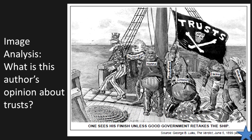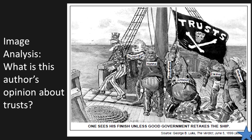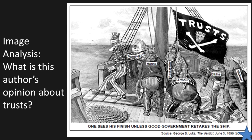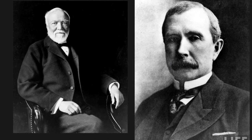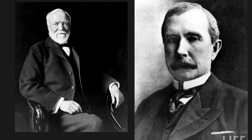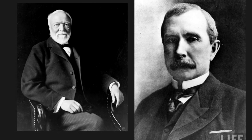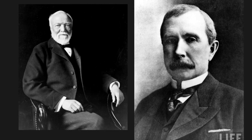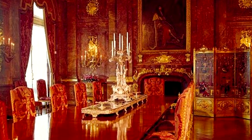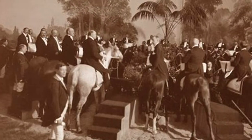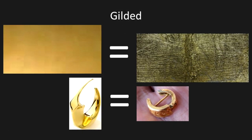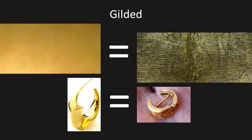The next image analysis asks: what is the author's opinion about trusts? Remember, trusts are like monopolies. Because of the lavish lifestyles of people like Carnegie and Rockefeller, the period from 1865 to about 1900 became known as the Gilded Age. But remember, Gilded only looks good on the outside — when people thought about America back then they'd think of Rockefeller or Carnegie, but in reality most people were not living like that. Gilded: on the outside it looks like gold, but on the inside it's just metal.